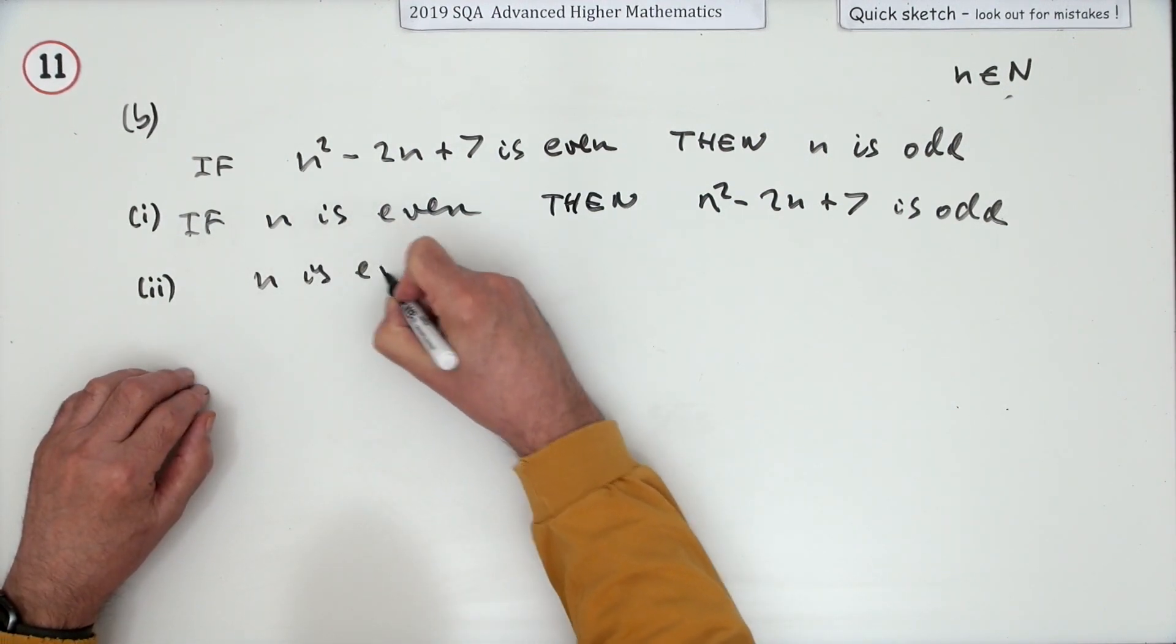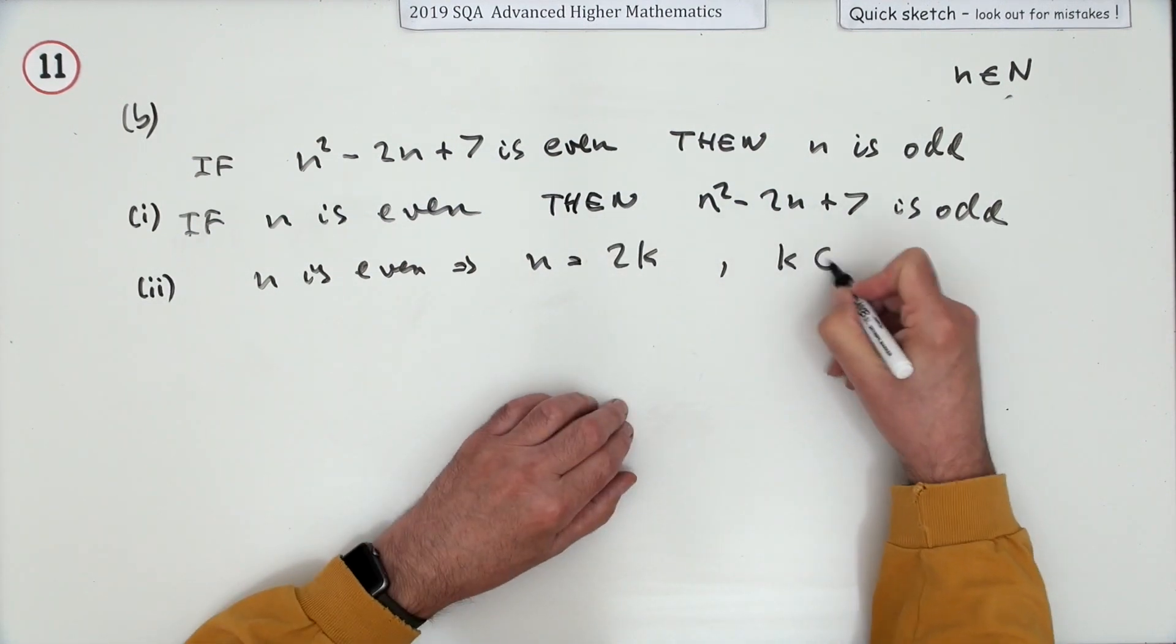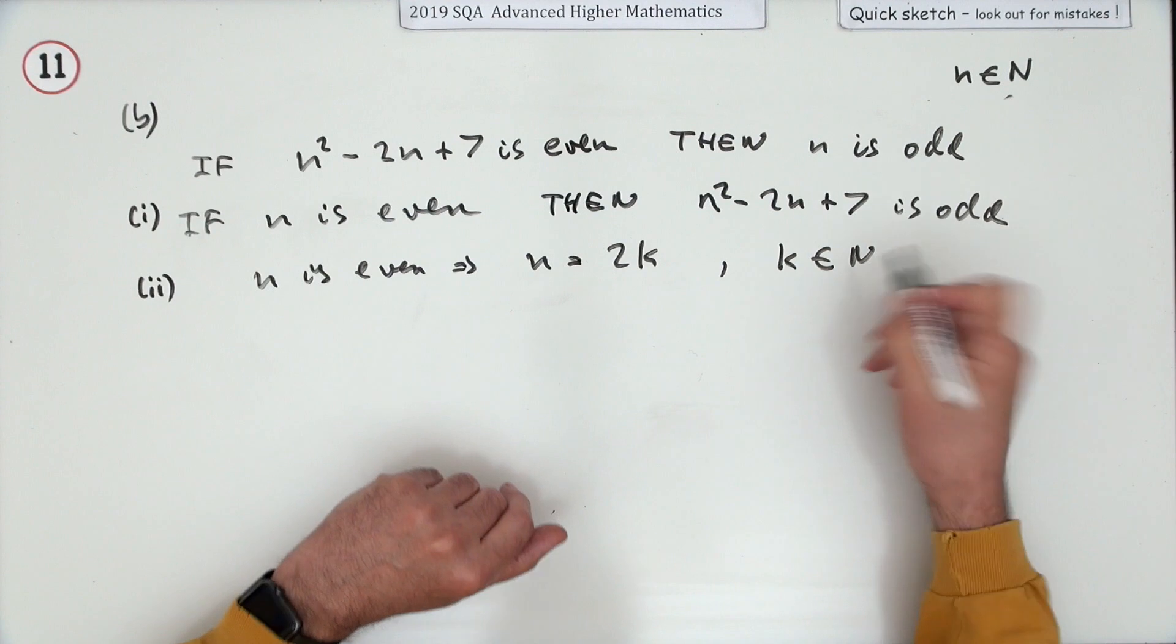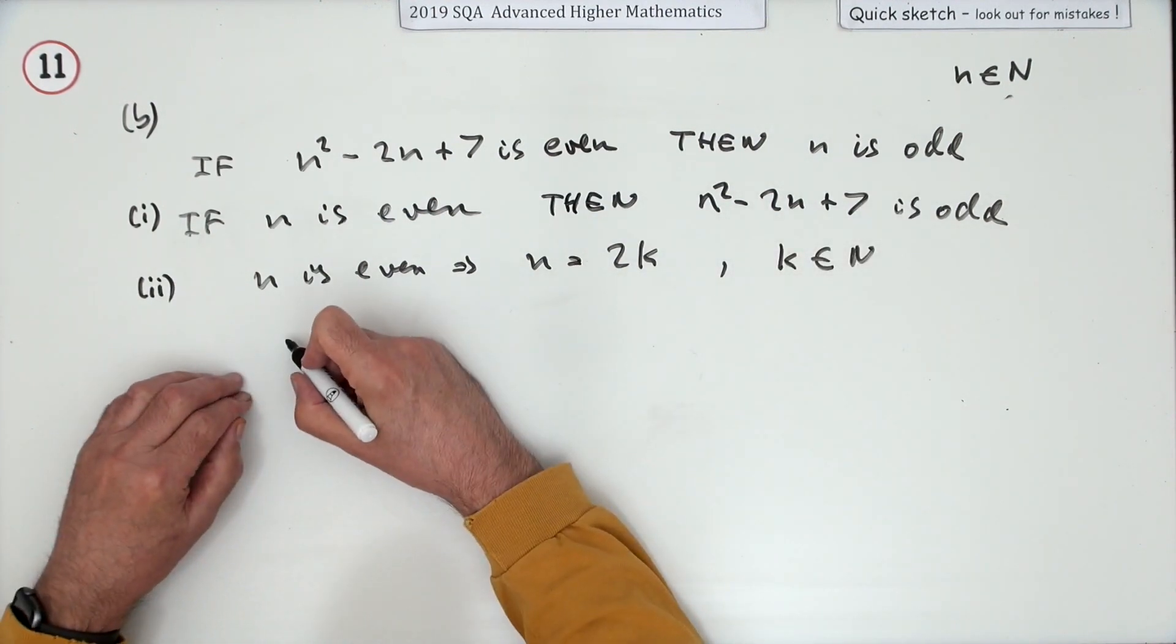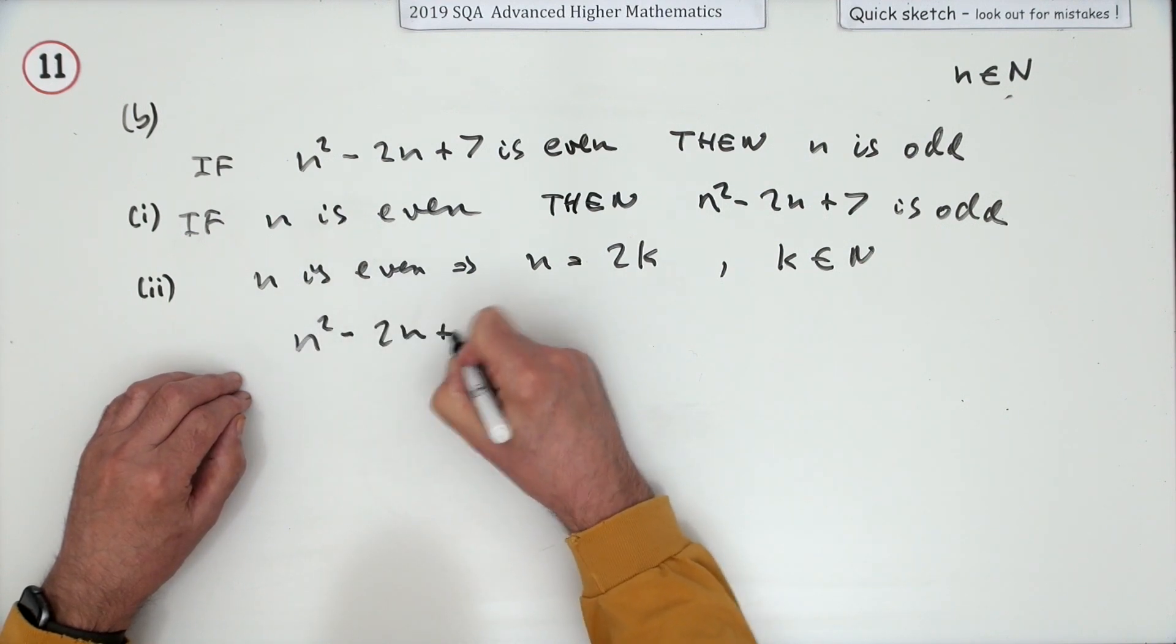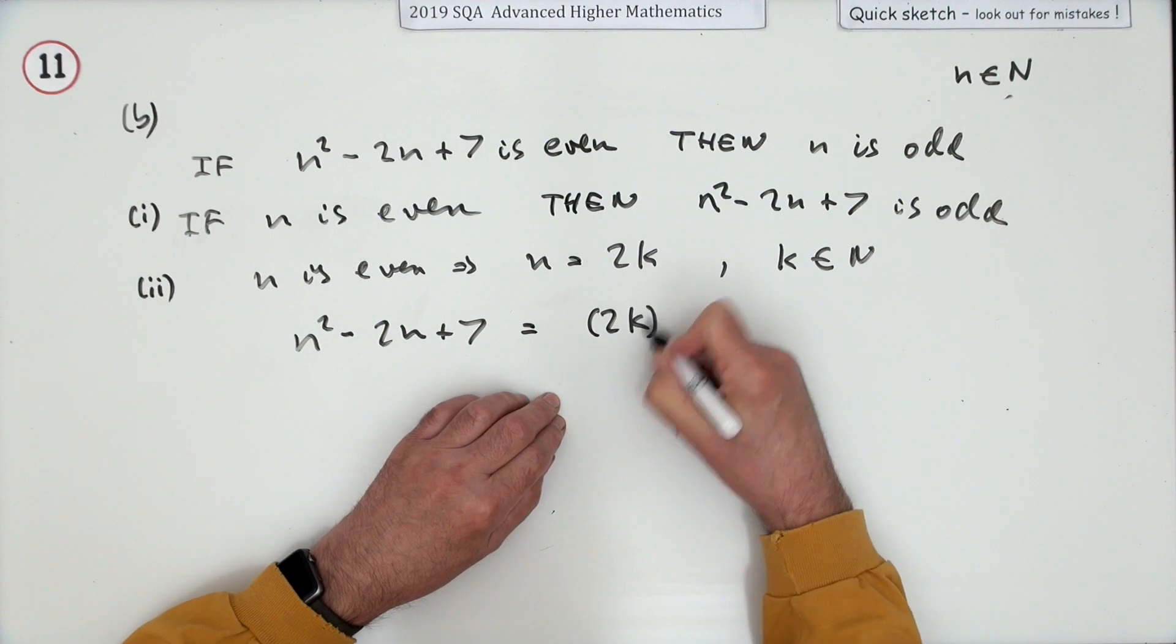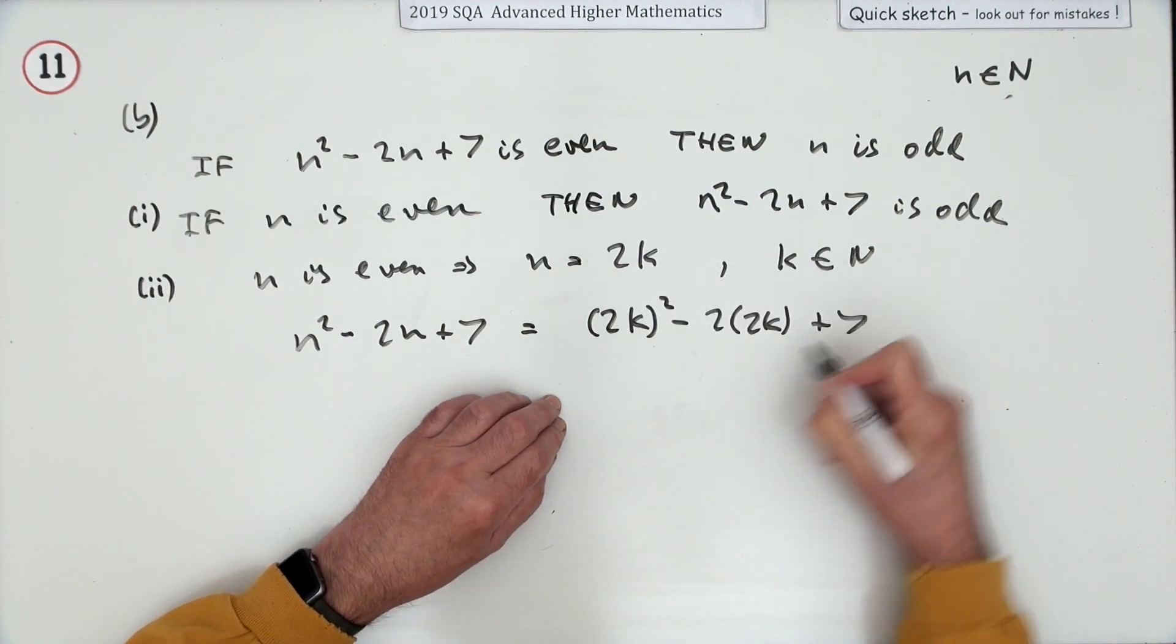How can you prove this directly? You'd say: n is even means that n can be expressed as 2k where k would be some positive integer. When you take your statement, n²-2n+7, that would be (2k)²-2(2k)+7, so that's 4k²-4k+7.